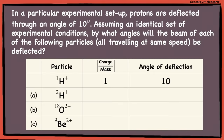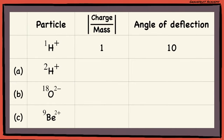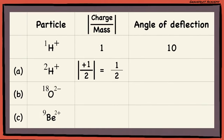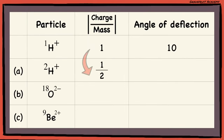Let's take a look at a question. For part A, the charge is +1 and the relative mass is 2, so the magnitude of the charge-to-mass ratio is 1/2. Since the angle of deflection is directly proportional to the charge-to-mass ratio, when the charge-to-mass ratio is halved, the angle of deflection will also be halved. So the angle of deflection will be 5 degrees.